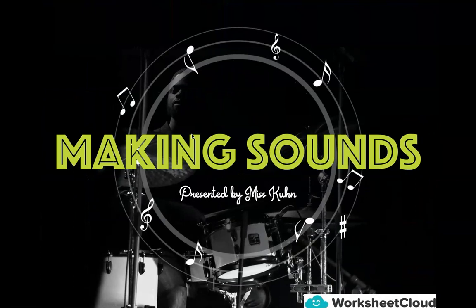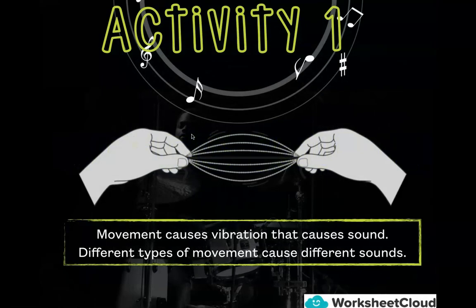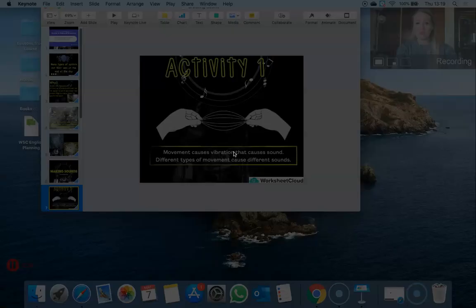Today's science lesson we are going to have some fun — we're going to be making sounds and exploring different types of sounds. As you know, we've been learning all about energy, different types of energy, and we focused on sound energy: looking at musical instruments, how sound is made, and how vibrations cause sound and vice versa. Today I thought we could just have some fun and learn about different sounds. I recommend doing this at home. I've got three activities to do.